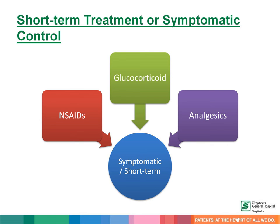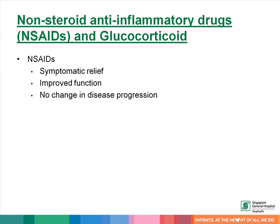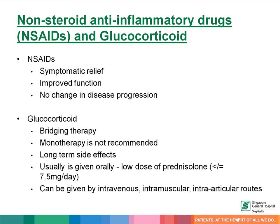The initial treatment of rheumatoid arthritis is usually symptomatic control. This can be achieved by prescribing glucocorticoids, non-steroidal anti-inflammatory drugs, or analgesics. NSAIDs provide symptomatic relief and improved function, but have no impact on disease progression. Glucocorticoids, usually used at low doses, are a common bridging therapy. Long-term monotherapy of glucocorticoid is not recommended due to many side effects. The medication can be given orally, intravenously, intramuscularly, or intra-articularly.